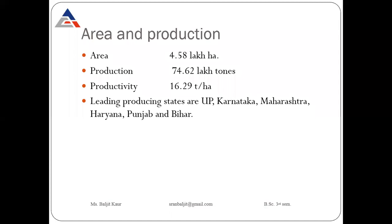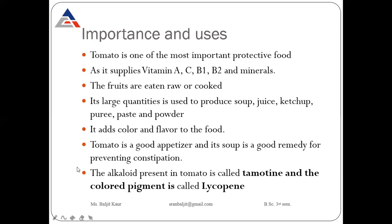Now area and production. Tomato is grown on an area of 4.58 lakh hectare in India, with production of 74.62 lakh tons and productivity of 16.29 tons per hectare. The leading states in India producing tomatoes are Uttar Pradesh, Karnataka, Maharashtra, Haryana, Punjab, and Bihar. So nearly 4.58 lakh hectare area is occupied by tomato in India.